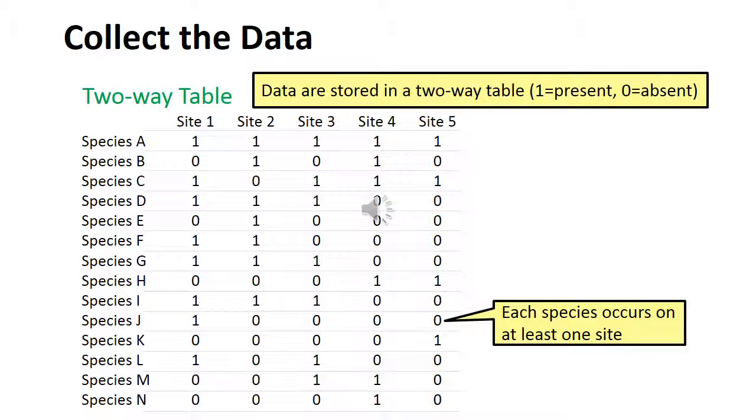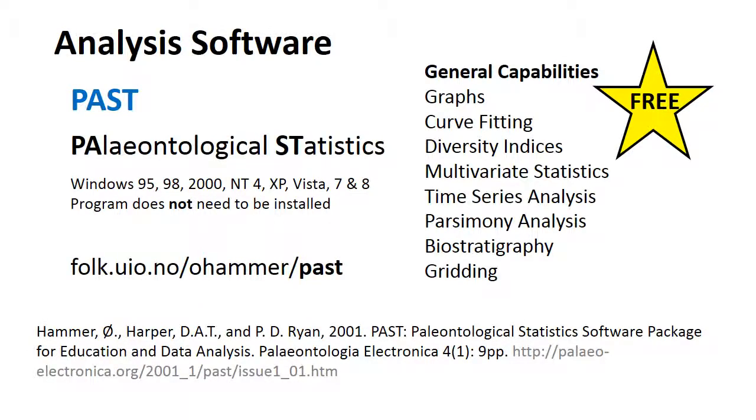It is important that there is at least one occurrence of each tree species on the five sites.